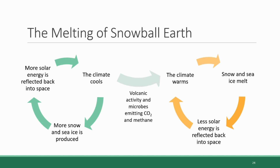So the positive feedback loop works in the warming direction as well as in the cooling direction. Getting into a runaway positive feedback loop in the warming direction is one thing that climatologists are very worried about when it comes to the current trends in the warming of the planet that we are seeing right now. But we'll talk more about that later.